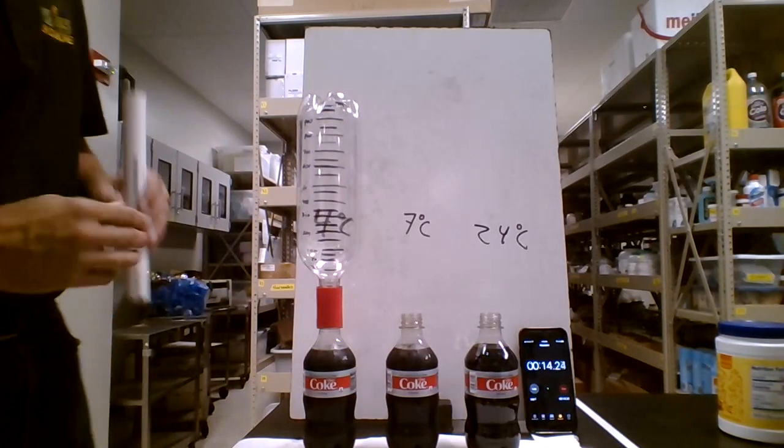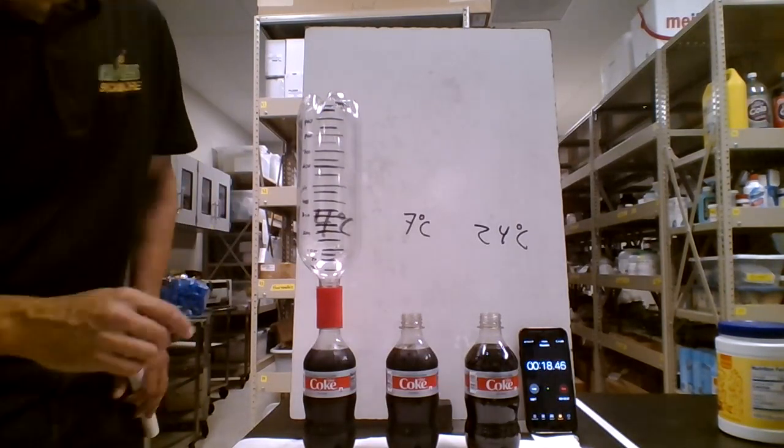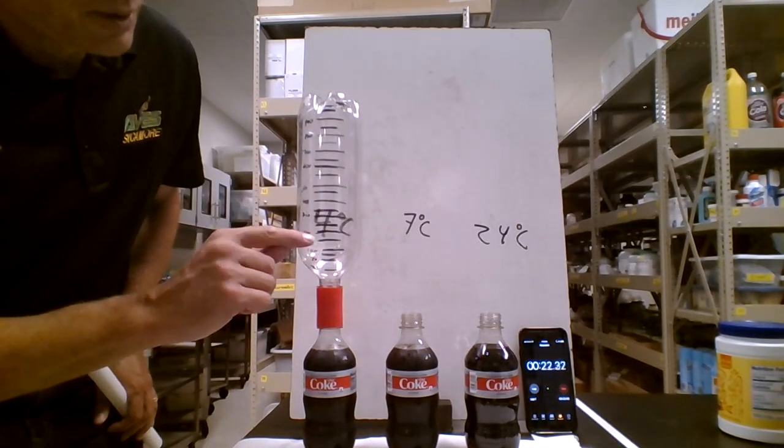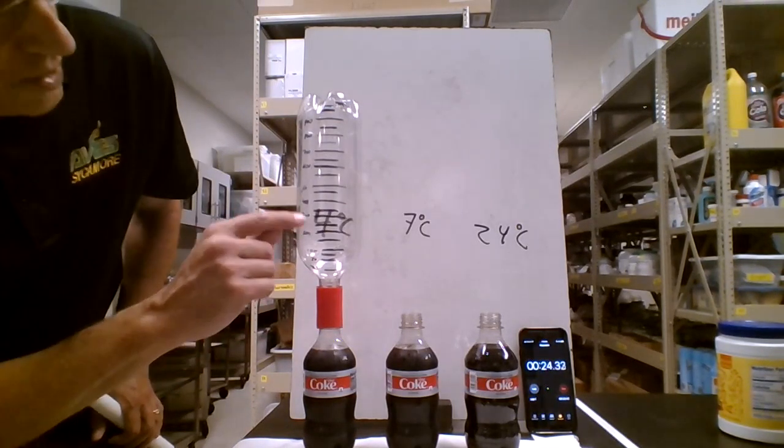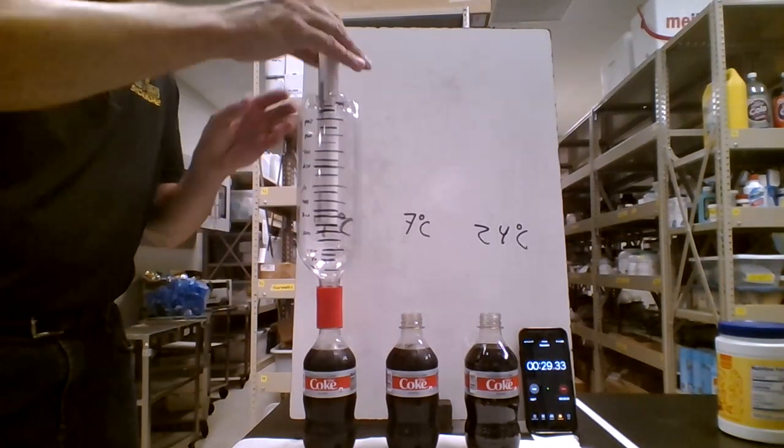So now there are markings here. Each marking is worth 50 milliliters. For instance, this right here is at 100, then 200, 300, 400, and so on. That's the milliliters. And there's a clock going, so you can play this back and get the time.